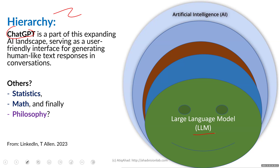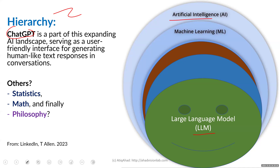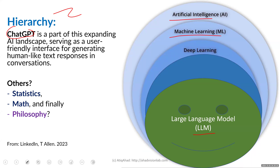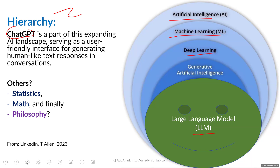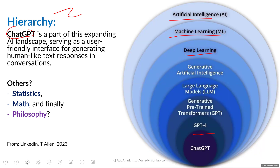AI is the broader category, and within it machine learning and deep learning handle large datasets. Then comes generative artificial intelligence and large language models based on generative pre-trained transformers — GPT — which has different versions. By the time you listen, there will likely be many more versions because progressions are amazingly fast.